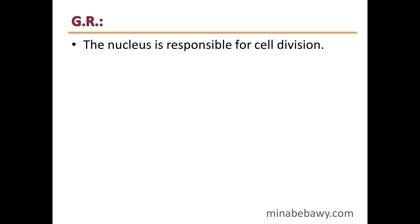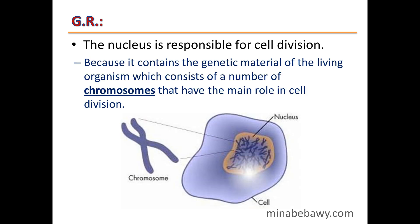Give reason: The nucleus is responsible for cell division. This is because the nucleus contains the genetic material of the living organism, which consists of a number of chromosomes that have the main role in cell division. So the nucleus is responsible for cell division because it contains chromosomes.